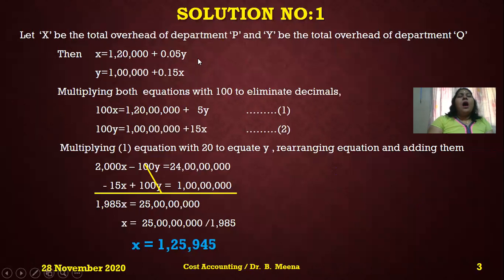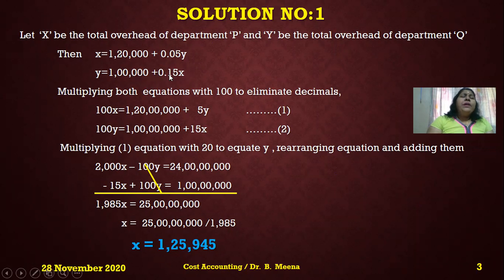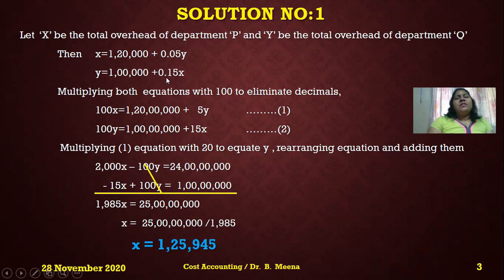Once the equations are framed, we need to remove the decimals. In these equations there are two digits after the decimal, so we multiply both equations by 100 to remove the decimals. If you had only one digit after the decimal, you would multiply by 10.